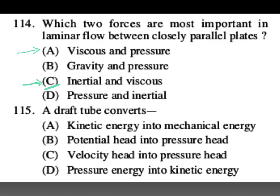A draft tube converts velocity head into pressure head. C is your answer. The function of a draft tube: it decreases velocity and increases pressure head, and prevents flow separation. Velocity head decreases and pressure head increases.